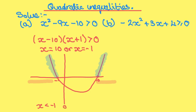So our solutions are x must be less than -1, or x must be greater than 10. For part b, -2x² + 3x + 4 is greater than or equal to 0, we're going to use a GDC.